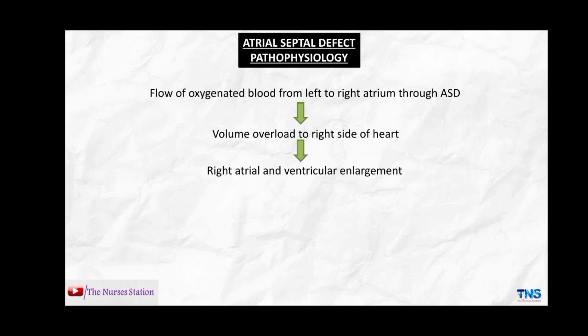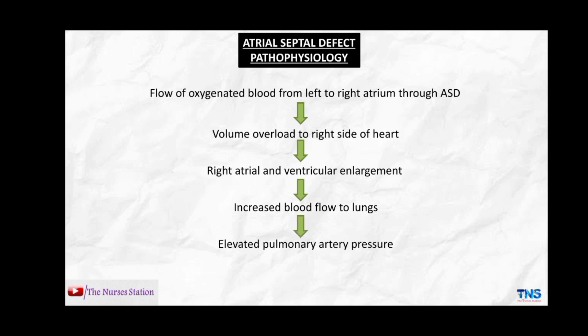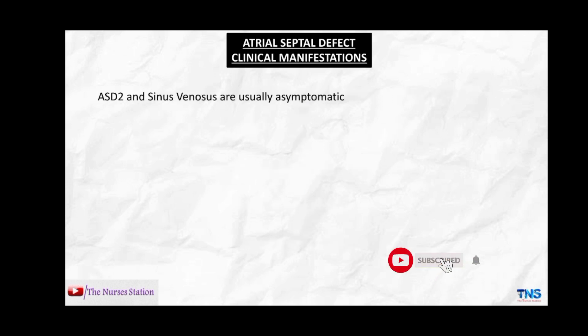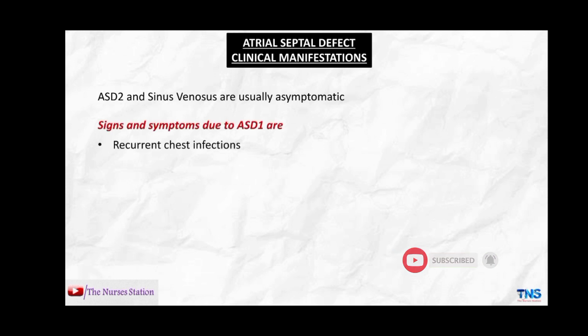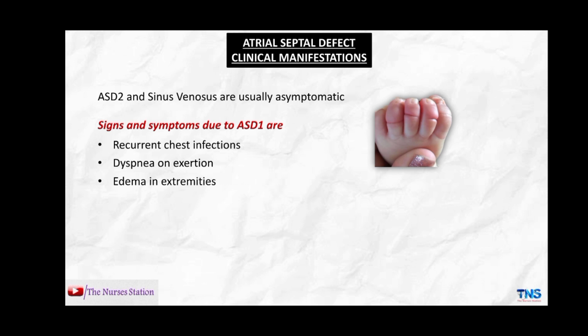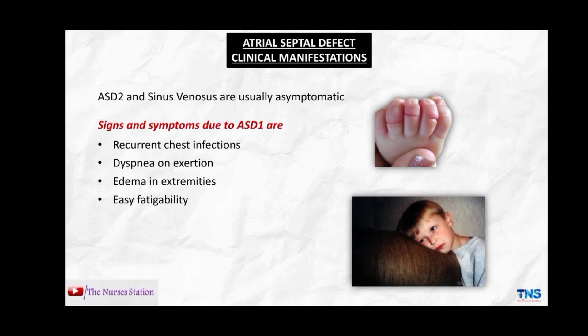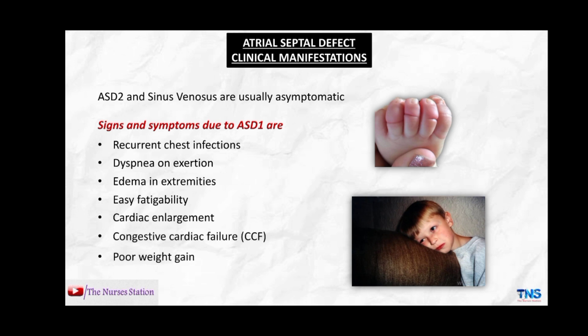Due to volume overload and increased workload on the right side of the heart, right atrial and ventricular enlargement occurs. Since the right ventricle is already overloaded with extra blood, there is increased blood flow to the lungs, leading to elevated pulmonary artery pressure or pulmonary hypertension. ASD2 and sinus venosus defects are usually asymptomatic, but ASD1 presents with recurrent chest infections, dyspnea on exertion, edema in the extremities, easy fatigability, cardiac enlargement, congestive cardiac failure, and poor weight gain.